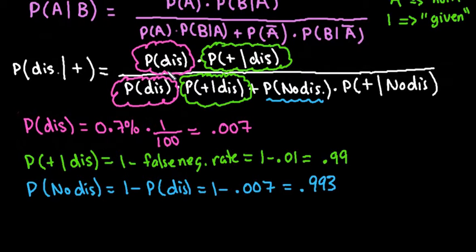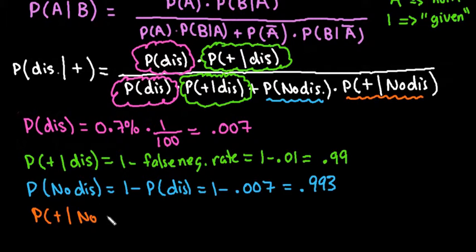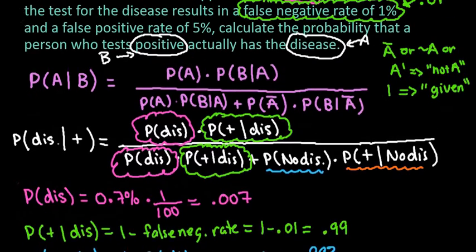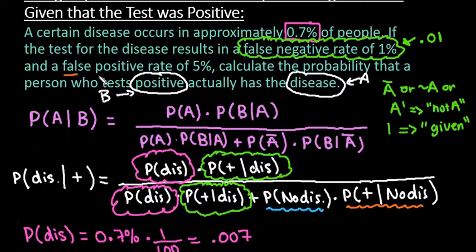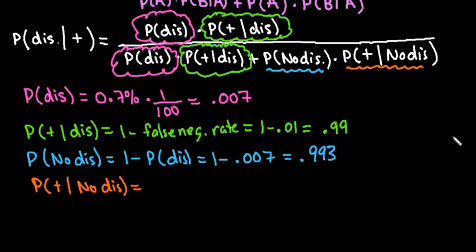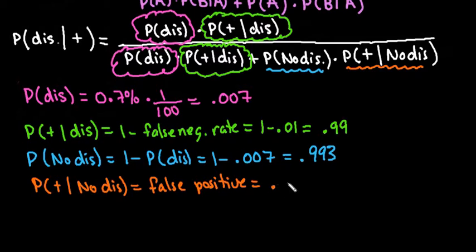The last value we need is the probability of testing positive given that we don't have the disease — that means we had a false positive, where we really don't have the disease but tested positive. This is the false positive rate of 5%, which we convert to 0.05. So our false positive value is 0.05.